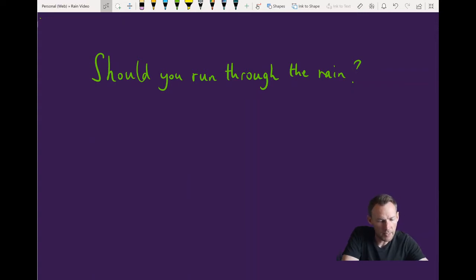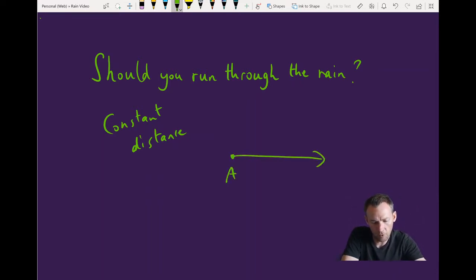We're going to look at this two ways. First, let's assume that you'll be traveling a constant distance and this is the most likely scenario. You start at point A, you have to walk or run to point B and you can take as long or short of a time as you want to.